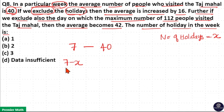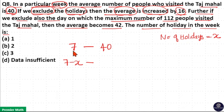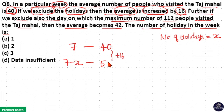There are a total of 7 days in a week. When we exclude the holidays X, then 7 minus X is the total number of remaining days. Previously, without exclusion of holidays, the number of days is 7 and average is 40. After excluding the holidays, the average is increased by 16, that means the average becomes 40 plus 16, which is 56, for 7 minus X days.